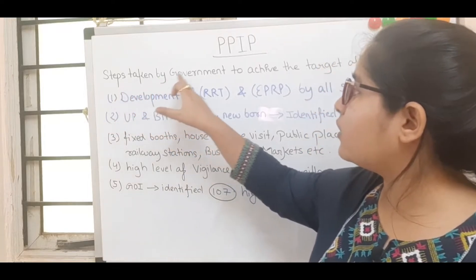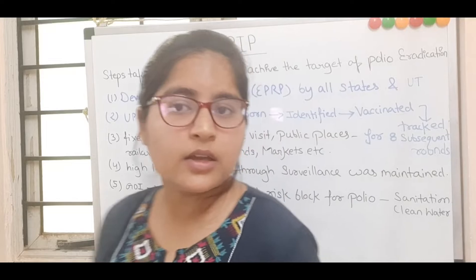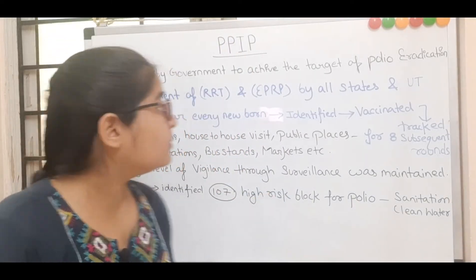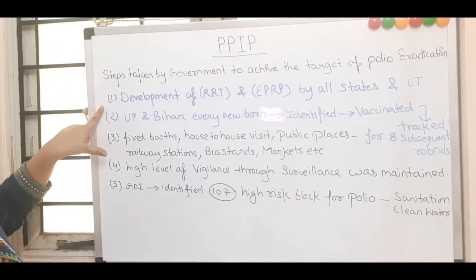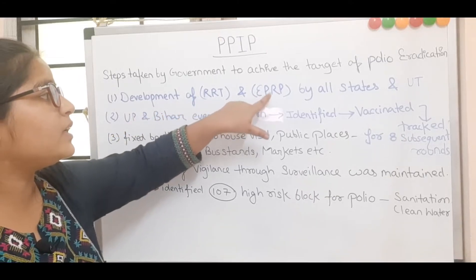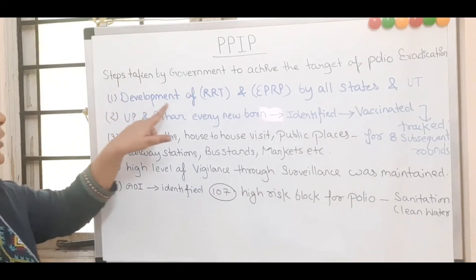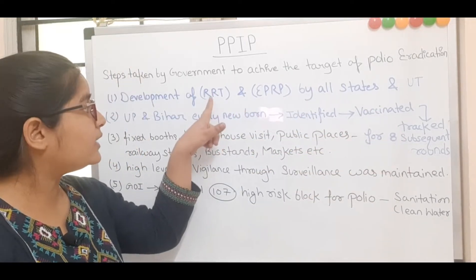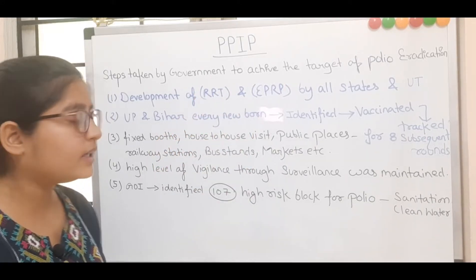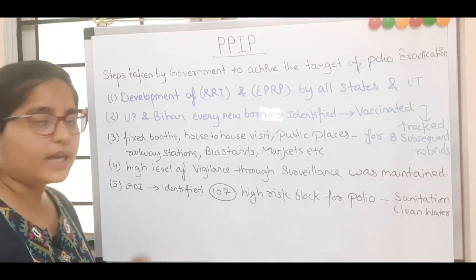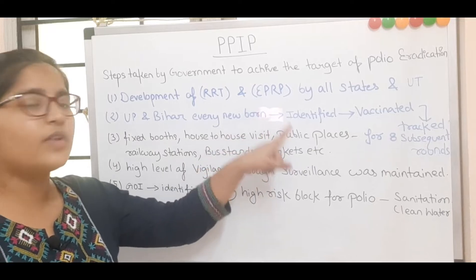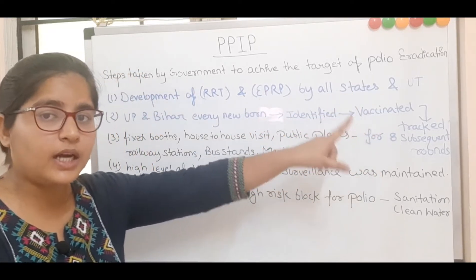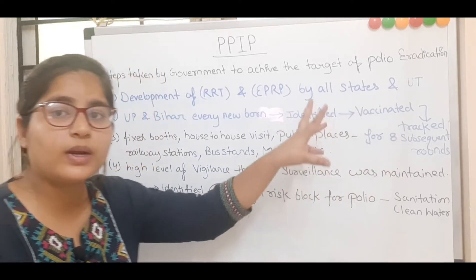Next, we will see the steps taken by the government to achieve the target of polio eradication. The first step was development of RRT — Rapid Response Team — and EPRP — Emergency Preparedness and Response Plan — by all states and union territories. In states like Uttar Pradesh and Bihar, every newborn was first identified, then vaccinated, and tracked for each subsequent round of vaccination.